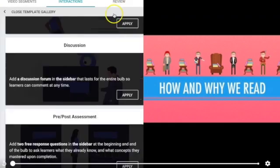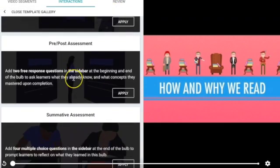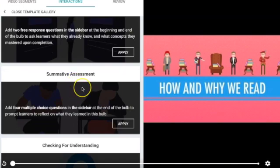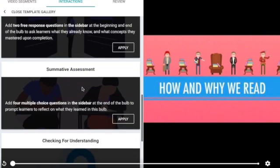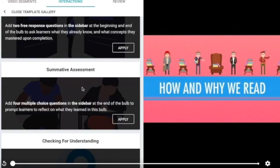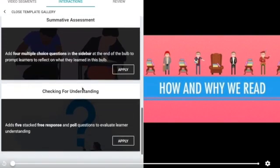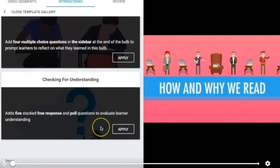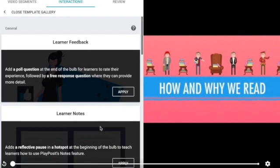And then I'm going to go back to the template gallery. Pre and post assessment - this is great. It just asks a question at the beginning and the end about what do you know or want to learn about this topic, and then at the end, what did you learn? A summative - if you want to ask all your questions at the end, it'll add four multiple choice questions. Now you have to type in the answers and the questions. Or you can have five free response and poll questions at the end, but I'm going to just do it manually at this point.